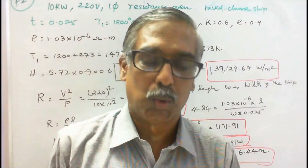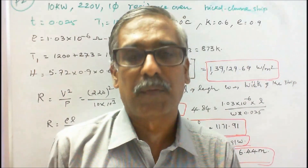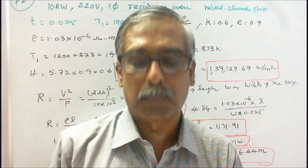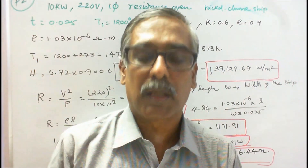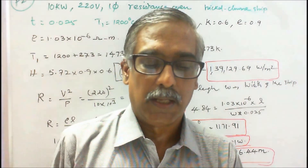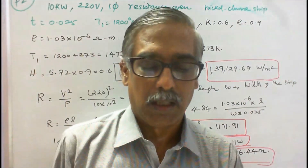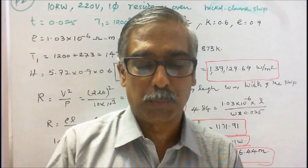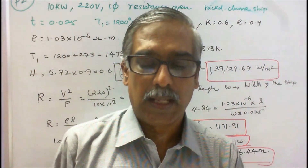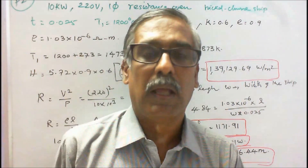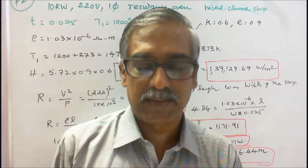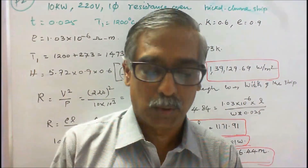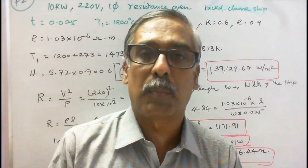Problem 2: A 10kW, 220V resistance oven employs a nickel-chrome strip of thickness 0.025 cm. If the wire temperature is not to exceed 1200°C and the temperature of the charge is to be 600°C, calculate the width of the strip. Assume radiating efficiency is 0.6, emissivity is 0.9, and resistivity of the wire ρ equals 1.03×10⁻⁶ ohm-meter.